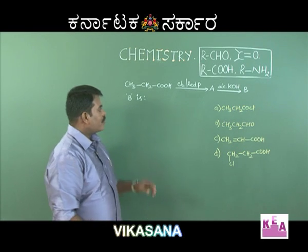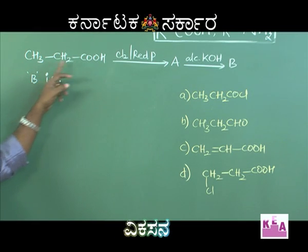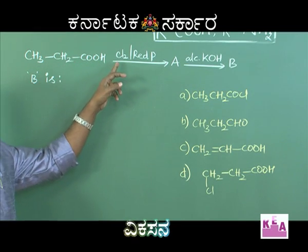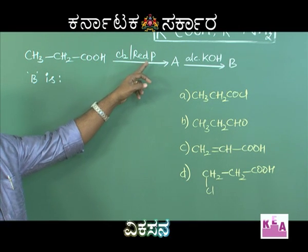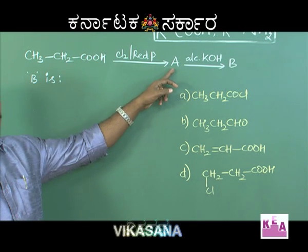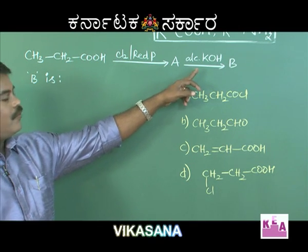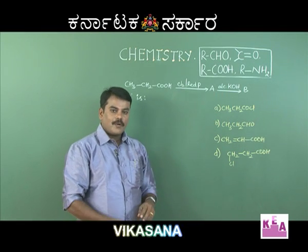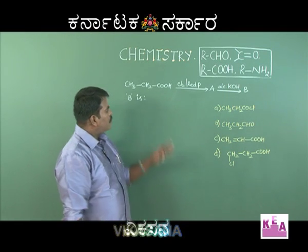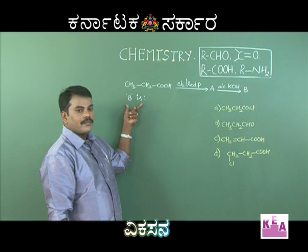The question is: propanoic acid, on treating with chlorine in the presence of red phosphorus, gives compound A, which upon treating with alcoholic KOH gives compound B. In the following sequence of reactions, what is B?